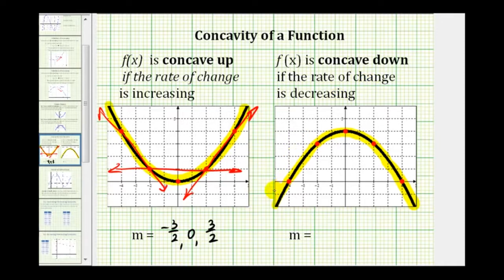And then again, if we did the same thing and found the average rates of change through these two points, these two points, and these two points, the slopes of these lines would be positive three halves,